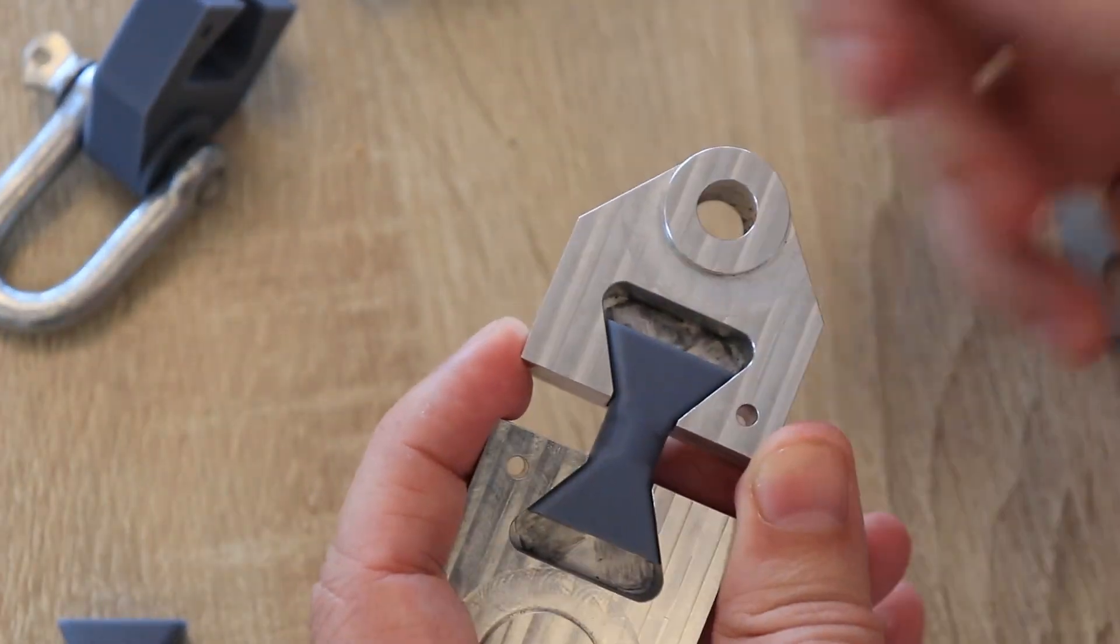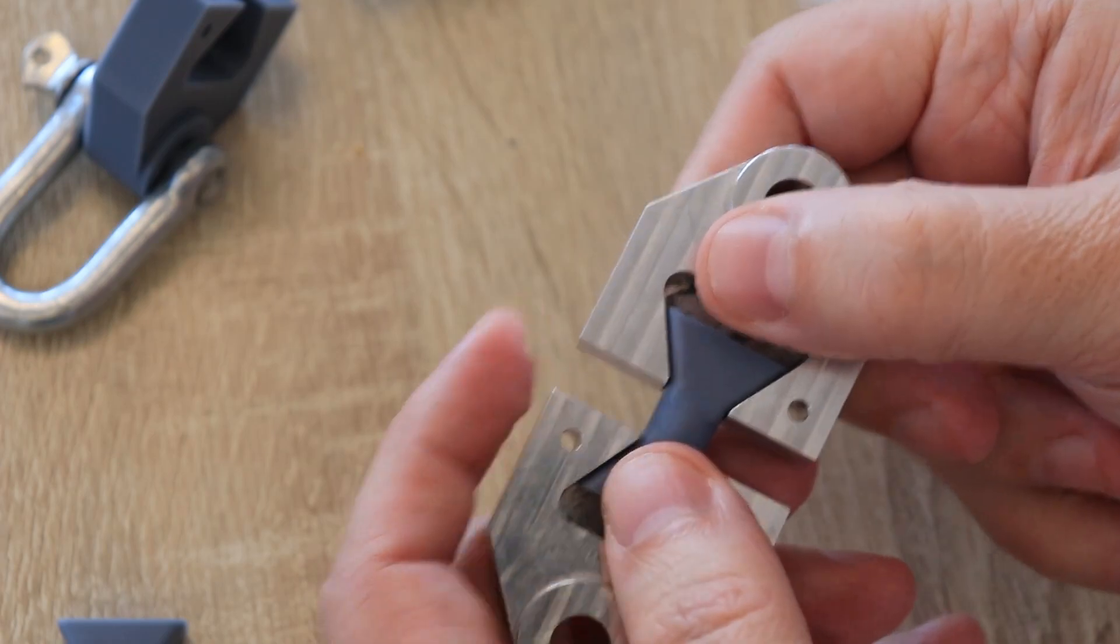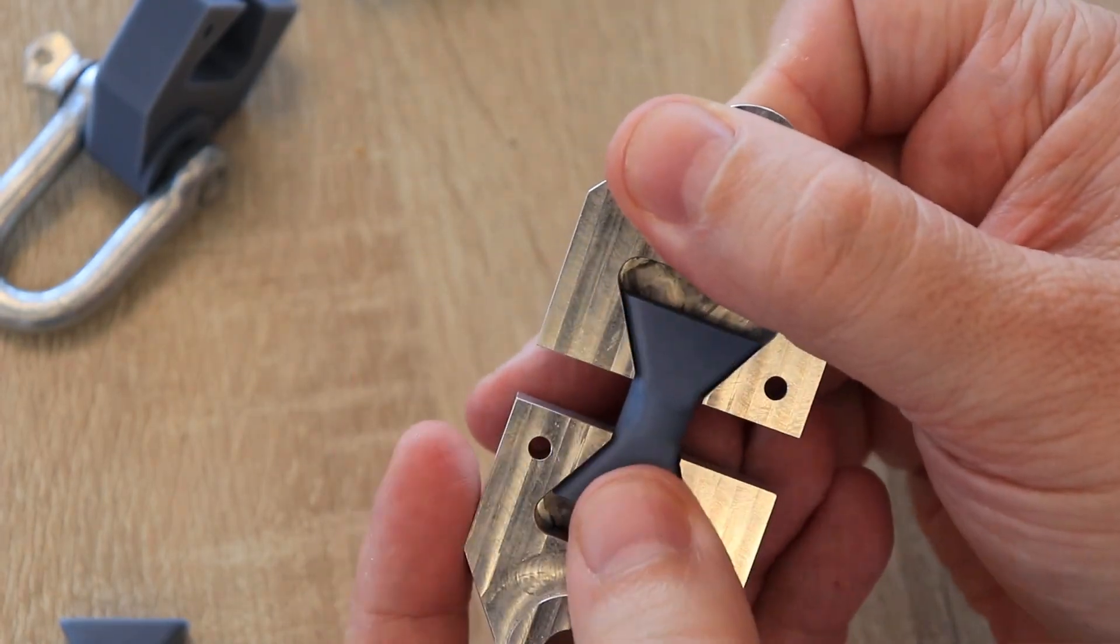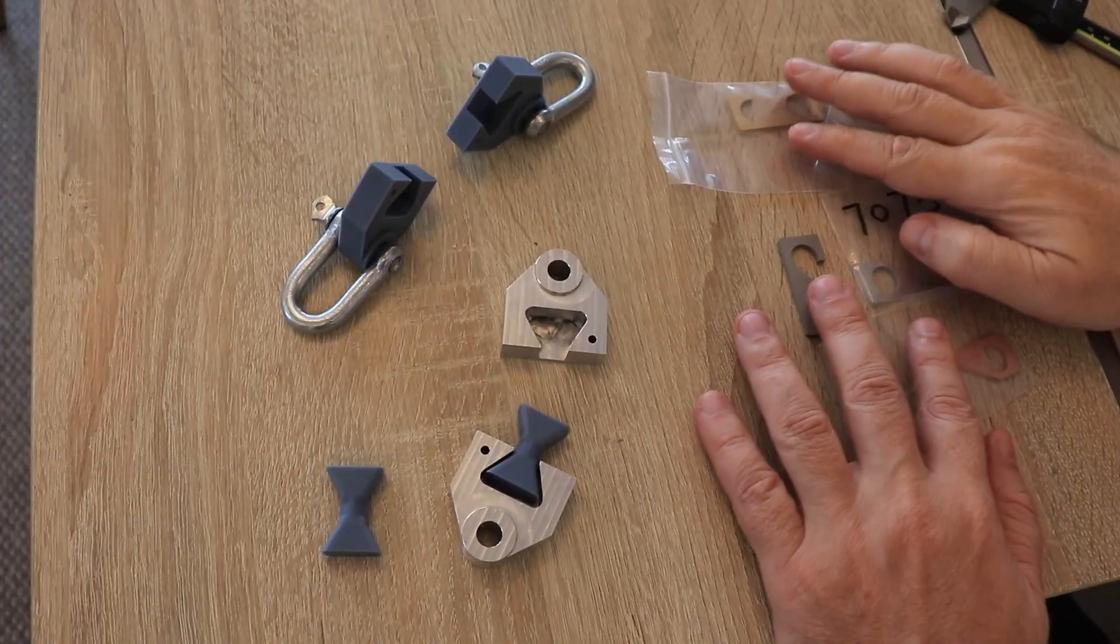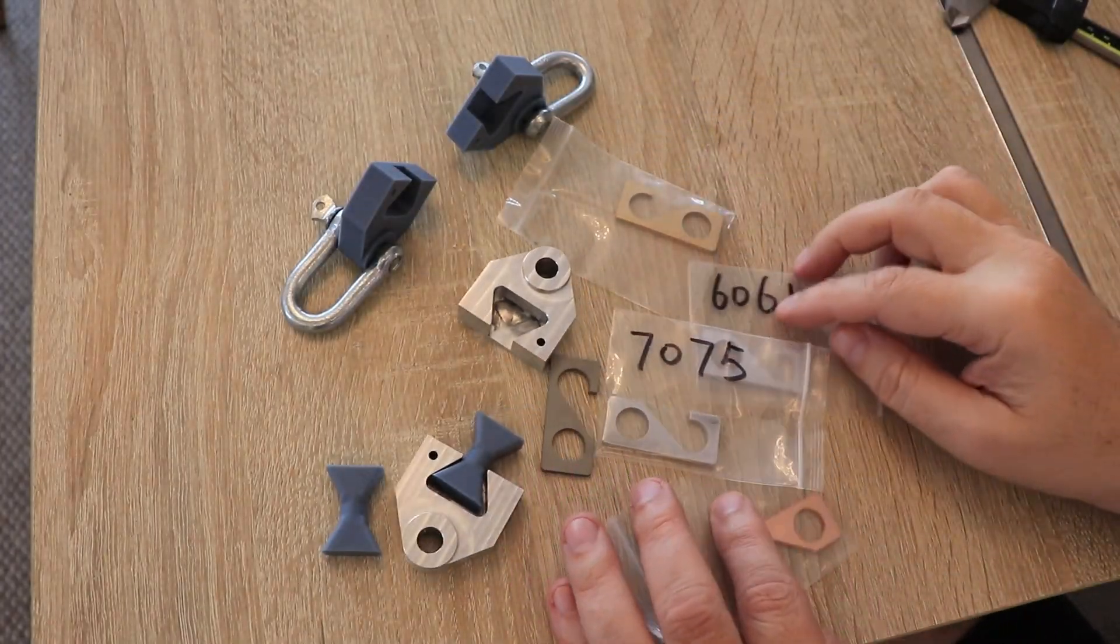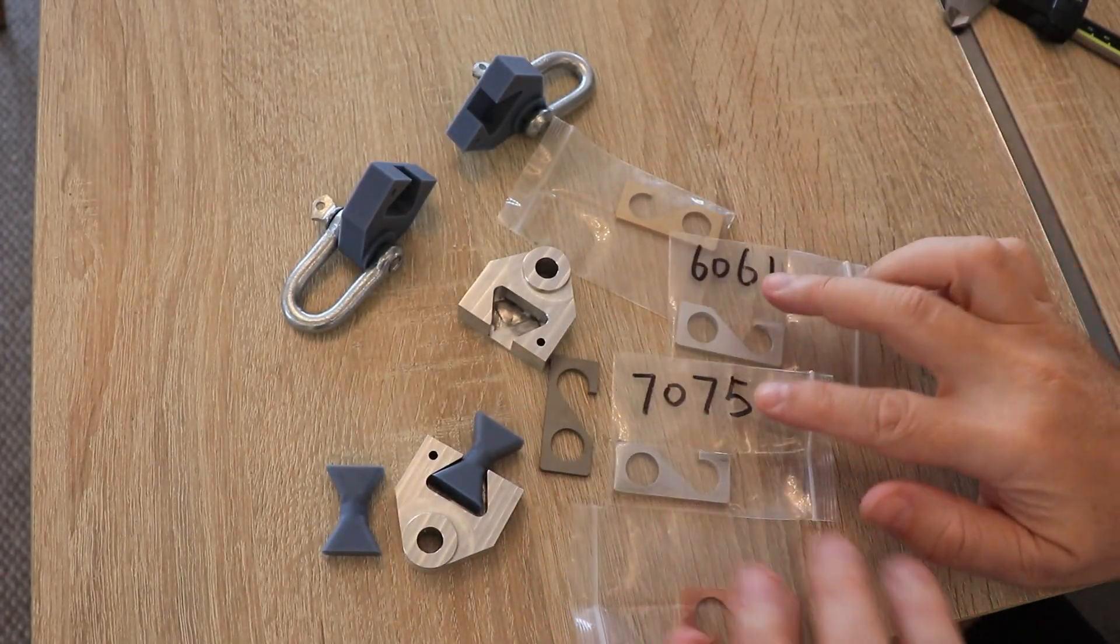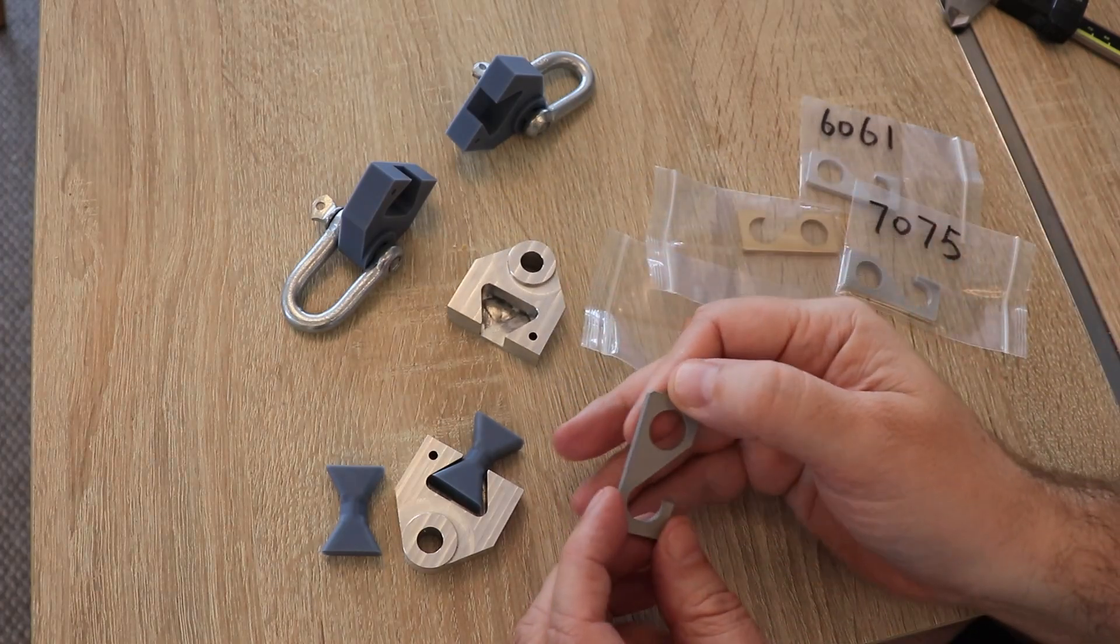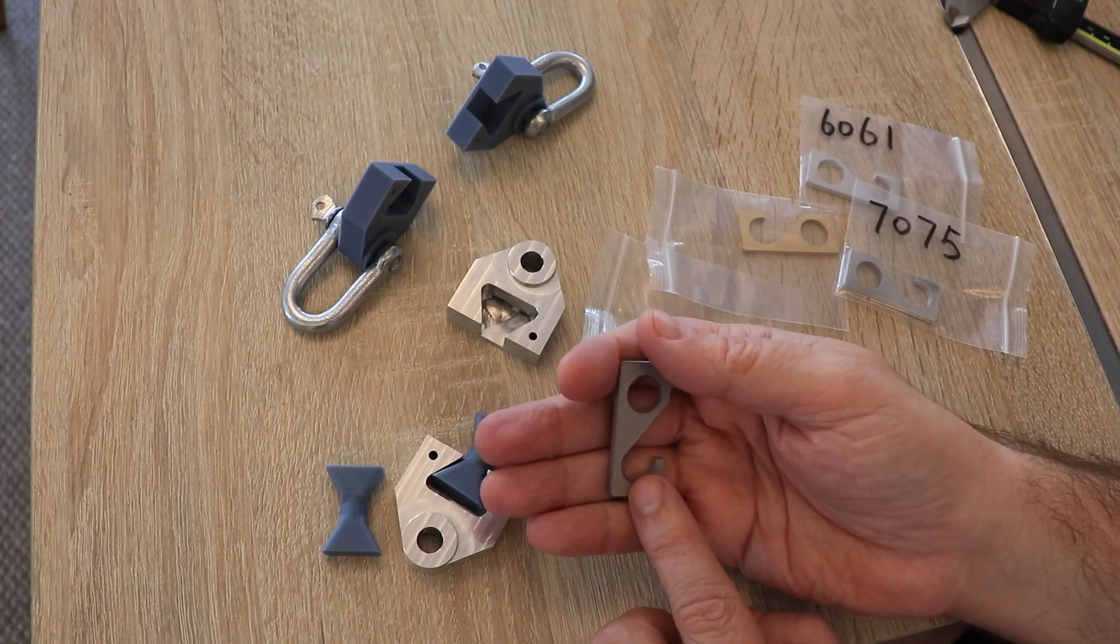So these test objects are bigger, 2 walls and 20% infill. And with this I can test the layer adhesion with more realistic objects. And additionally these are those test hooks I got in this package. These are two types of aluminum, brass and copper. And also I ordered this one. This is from 3D printed steel.